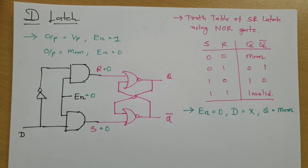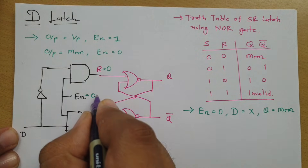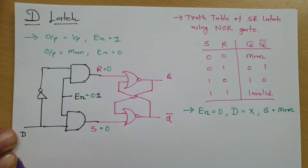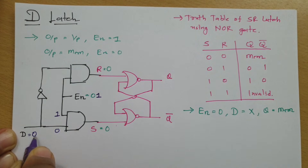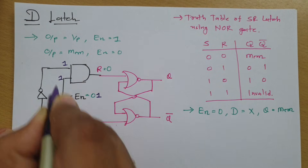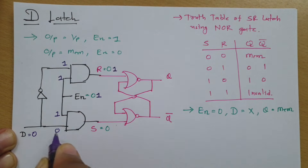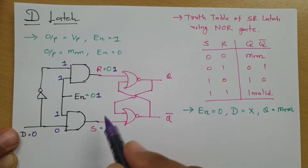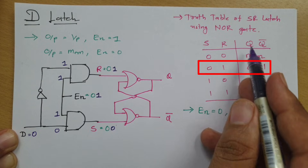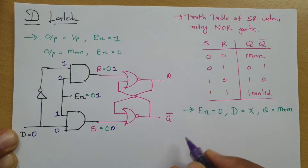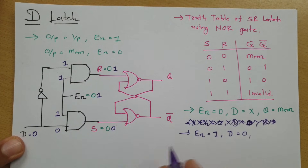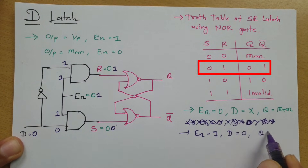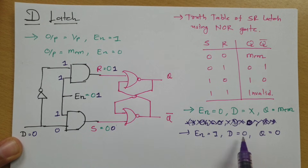Now let us consider the second case where enable equals 1. When enable equals 1, there are two possibilities for D. Let us consider D equals 0. With enable=1 and D=0, the inverted D gives 1, so the reset AND gate gets inputs 1 and 1, making R=1, and the set AND gate gets inputs 1 and 0, making S=0. When S=0 and R=1, Q and Q bar will be 0 and 1. So when enable=1 and D=0, Q equals 0 — meaning Q equals D.